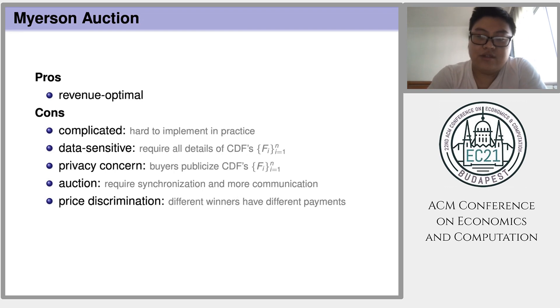In practice, those distributions are learned from market research and historical transaction records. So once the learned value distributions are just approximately correct, the resulting mechanism may not be revenue optimal. So Myerson Auction is data sensitive.